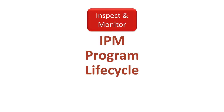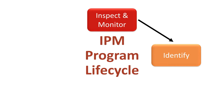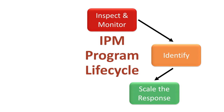Number one: inspect and monitor. First, we inspect to determine if we have pests. Number two: identification — we want to be sure we know what the pest is so we know the best way to combat it. Number three: scale the response to the level of infestation. Knowing the level of infestation will help us launch an appropriate response. For example, we would treat the discovery of three bed bugs differently than 300. Monitors will help us quantify the size of the infestation so we can scale the response.